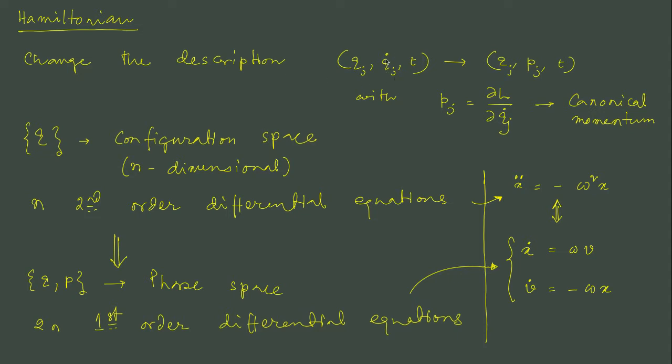Now we would like to change the description from generalized velocity to generalized momentum, which we defined earlier as p_j, the generalized momentum for jth generalized coordinate to be the partial derivative of the Lagrangian with respect to jth generalized velocity. This quantity p_j is a generalized momentum and also we often call it as canonical momentum.